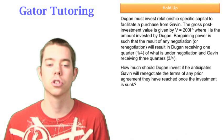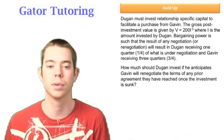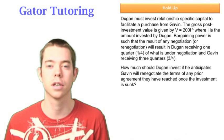The question says, how much should Dugan invest if he anticipates Gavin will renegotiate the terms of any prior agreement they have reached once the investment is sunk?